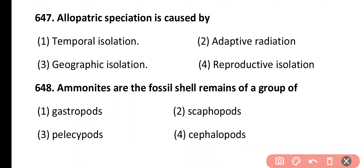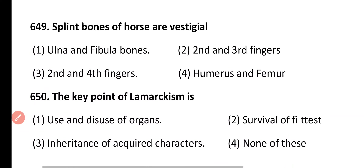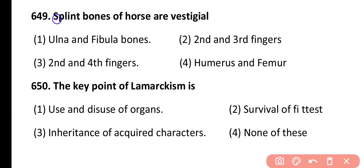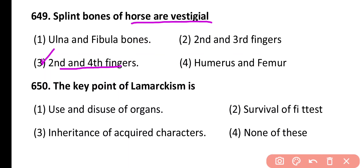Question 649. Vestigial bones of horse are: ulna and fibula bones, second and third fingers, second and fourth fingers, humerus and femur. Correct answer is option 3. Second and fourth digit fingers of horses are vestigial bones.